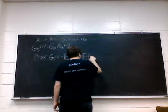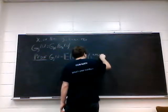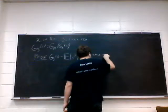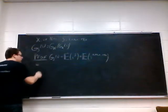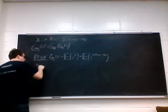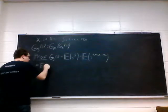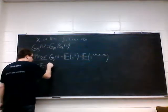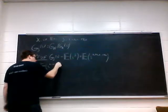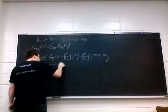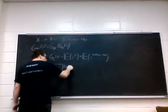This is the expected value of s to the x1 plus x2 plus x sub n. So we're going to say this is equal to the expected value of s to the x1 plus x2 plus x sub n, given n is equal to n.